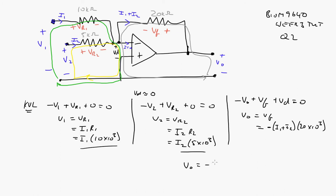Vout equals minus—it's going to be V1 over 10⁴ plus V2 over 5×10³, all times 20×10³. So I get minus 2V1 minus 4V2. And that's it.